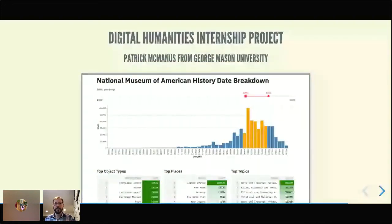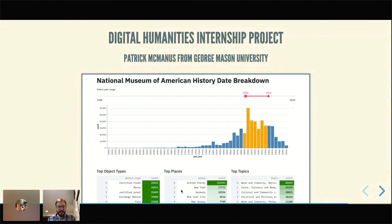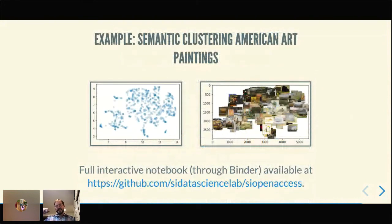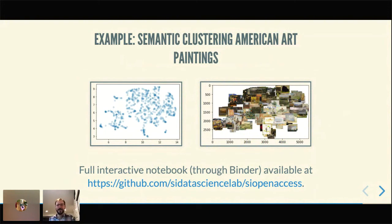I've also been working with an intern from George Mason University, Patrick McManus, who may or may not be in the audience. He focuses on American history — we looked at the holdings of the American History Museum to examine different dates and how different topics and places show up across different dates. This is a screenshot of a Streamlit app we built together. Another example, linked here, is a tutorial we built as part of our launch with AWS that shows how to pull down all the painting images from the American Art Museum and run them through a machine learning model to cluster them by content.